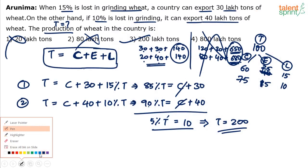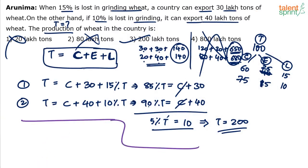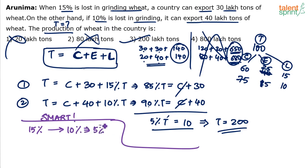Let me explain a smarter way of solving this. In Case 1, 15% is lost. In Case 2, 10% is lost. Which means, how much are we saving in Case 2? 5% is being saved. This 5% saving will be exported, because our consumption will remain the same. In Case 1, we exported only 30 lakhs. In Case 2, we exported 40 lakhs — 10 lakhs extra. So I can say that this 5% saving is equal to 10 lakhs.